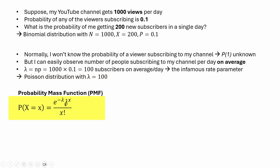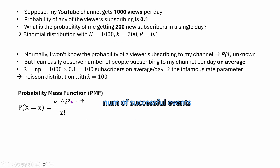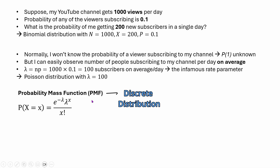The PMF is: e to the power minus lambda, times lambda to the power x, divided by x factorial. Lambda is the rate parameter — the average rate — and x is the number of successful events or number of events observed. For example, x would be 200 if we are asking about 200 new subscribers on some day. Poisson distribution is a discrete distribution because the number of events will always be an integer — it can be 0, 1, 2, etc. It cannot be 0.001 or values like that.